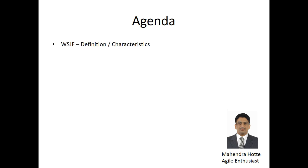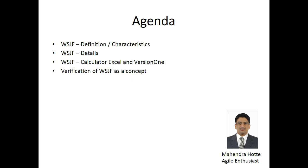The agenda for this tutorial is: first, we will understand what WSJF is — Weighted Shortest Job First — its definition and characteristics. Next, we will learn the details of WSJF. Then I will be showing a Microsoft Excel calculator for calculating WSJF and show a screenshot of how it works in Version 1. Finally, I will be validating WSJF as a concept using four projects with dummy values. So let's get started.